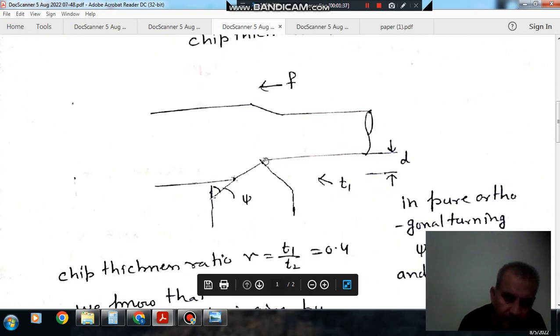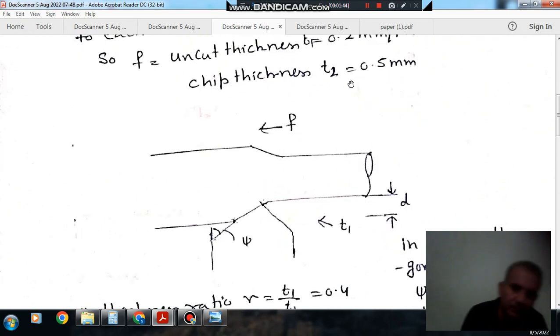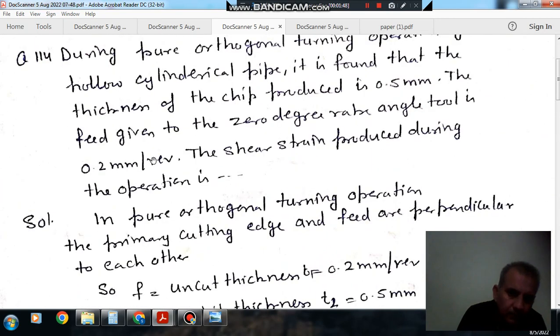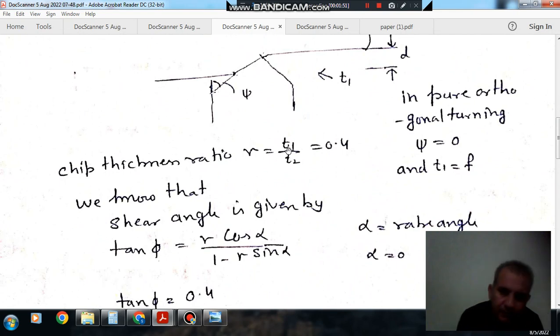So this is feed is in this direction, and primary cutting edge is this, so feed will be your uncut thickness, that is 0.2 mm per revolution, and chip thickness is your 0.5 mm. That is your uncut thickness, and rake angle is given as 0.